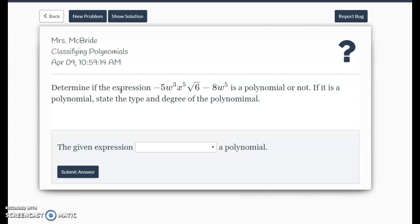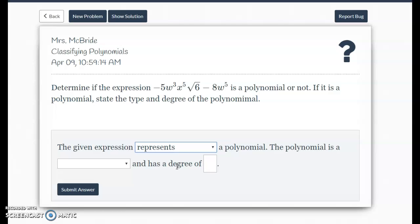So it says determine if the expression is a polynomial or not. If it is a polynomial, state the type and degree of the polynomial. So we have w cubed x to the fifth square root six minus eight w to the fifth. Now you see the square root and a lot of you want to be like, it's not a polynomial. However, a square root of a number does not make it not a polynomial. It's just the square root of a variable. So this does in fact represent a polynomial.